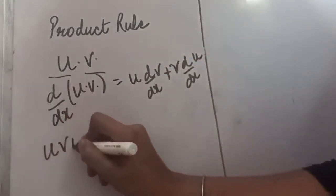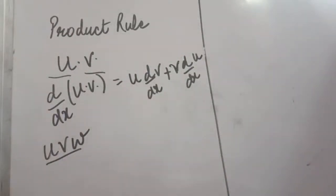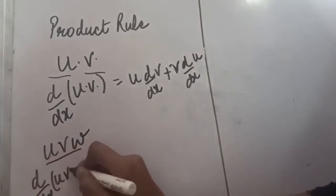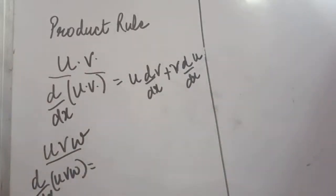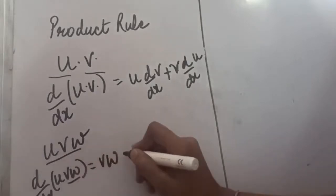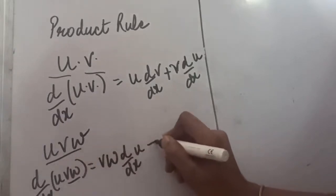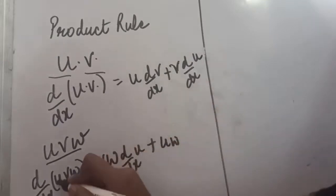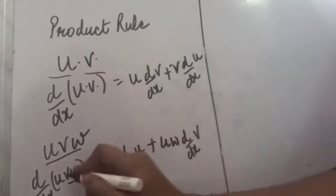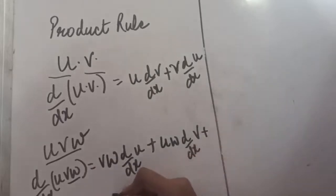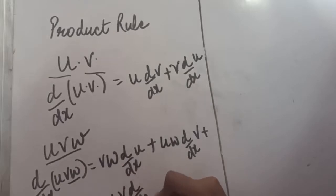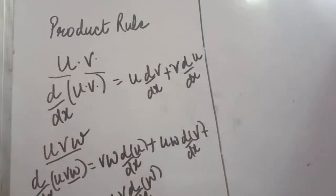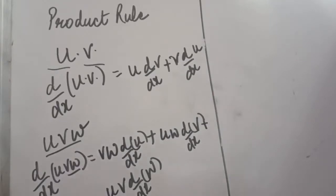If we have three functions u, v, w, the same formula can be extended further. To find d/dx of u·v·w, first keep v and w outside and take the differentiation of u. The second term keeps u and w outside and takes the differentiation of v. The third term keeps u and v outside and takes the differentiation of w. So one by one, each function's differentiation is taken while the other two are kept as-is.